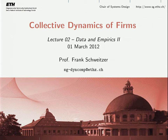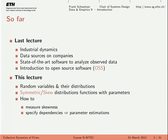Good morning, everyone. Welcome to lecture number two of our course, Collective Dynamics of Firms. Last week, I gave a broad introduction into the topic. As you probably recall, this is part of the larger field of industrial economics, or industrial organization, or industrial dynamics. This particular lecture focuses on data about thousands or even millions of companies and tries to find statistical regularities. Once we find these regularities, we have an interest to understand why this regularity is there, and of course we would like to develop models to reproduce this.